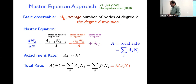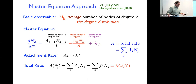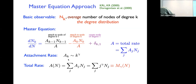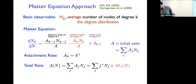A useful insight comes from looking at the total attachment rate. By definition it's the sum of the attachment rate to a node of degree J times the number of nodes of degree J. For power-law preferential attachment a_k ∝ k^γ, this is nothing more than the γ-th moment of the degree distribution, m_γ. Recognizing the total rate as this moment will be very useful in understanding how to solve the problem.